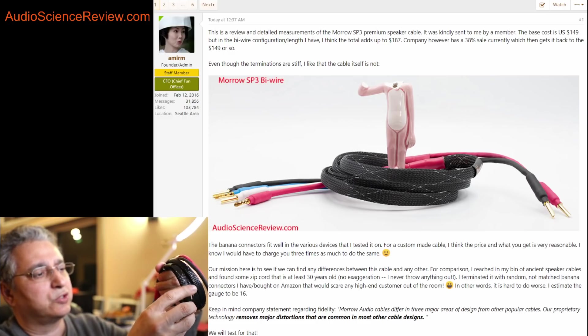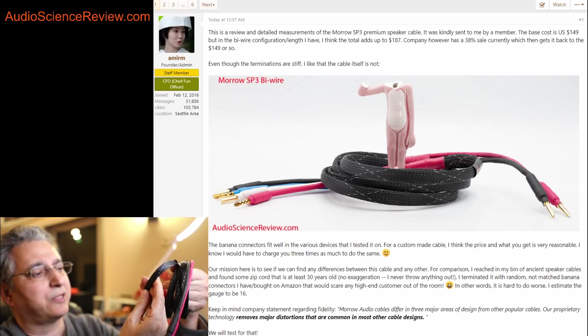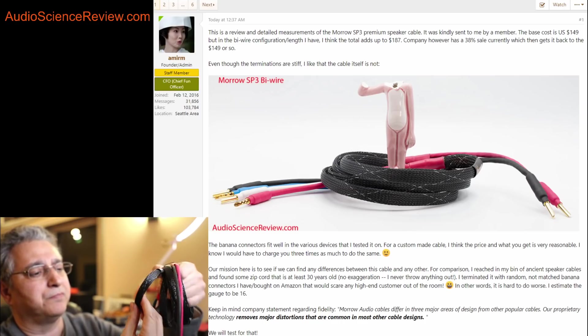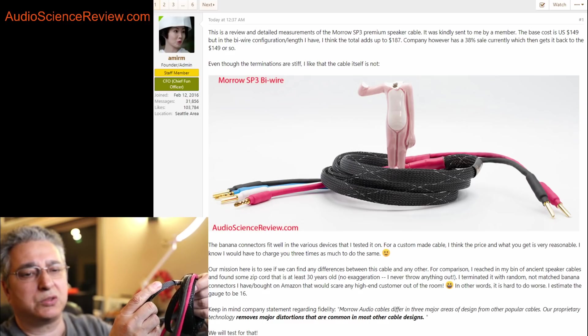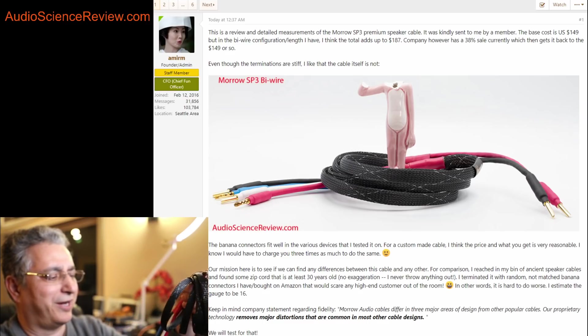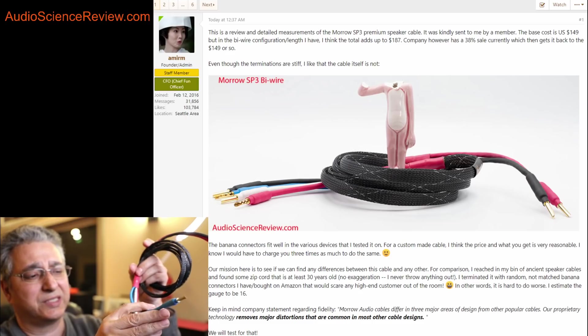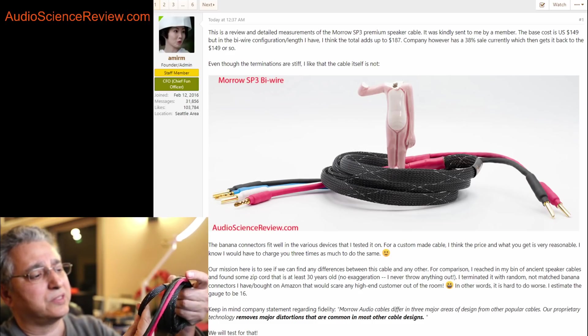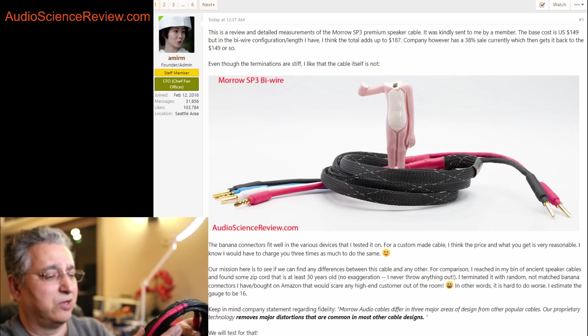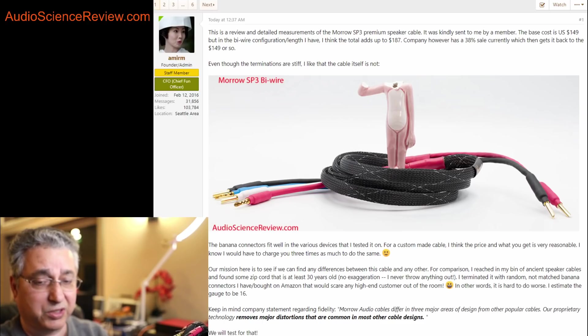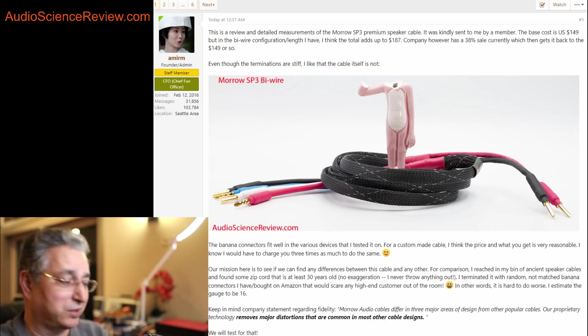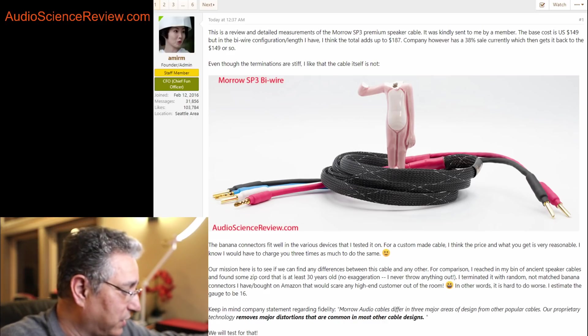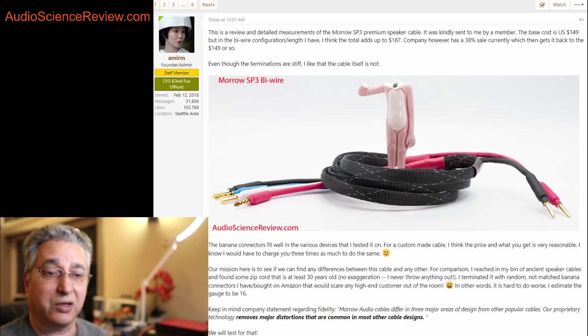The cable itself is actually quite flexible. I don't know what's inside this woven jacket, but it's much more flexible than typical high-end speaker cables. They tend to be stiff, but what's in here is soft, and it doesn't weigh a ton, which I appreciate. It seems like a lot of high-end companies want to sell by weight and dimensions and make these garden hose speaker cables hoping that customers are swayed by that.